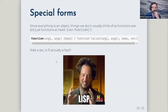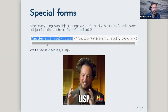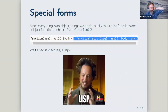Special forms: things we don't usually think of as functions — like 'function' itself — are still just functions. Even 'function' is a function. All of these parentheses and rearrangements of function names start making R feel a bit like Lisp. Brett leaves it there and notes that if anyone wants to discuss whether R is a Lisp, they're welcome to, but he won't be very useful in that discussion.